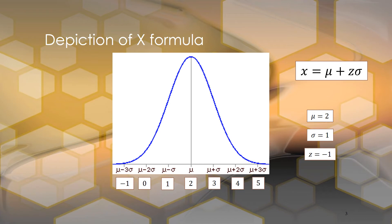A z-score of negative 1 means we're one standard deviation below the mean. On this distribution I have different values: in the middle is 2, the mean. Going right by one standard deviation gives us 3, then 4 is two standard deviations above, and 5 is three standard deviations above. Going left of the mean, 2 minus 1 is 1, which is one standard deviation below the mean. Zero is two standard deviations below, and negative 1 is three standard deviations below.